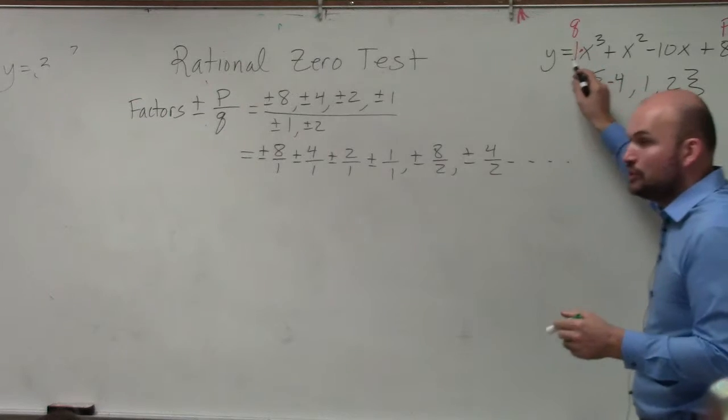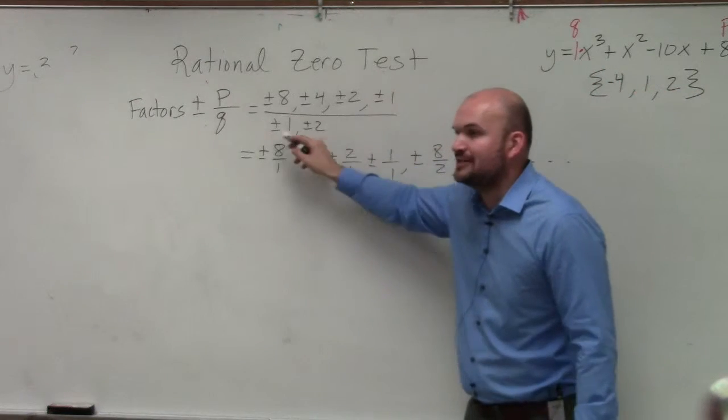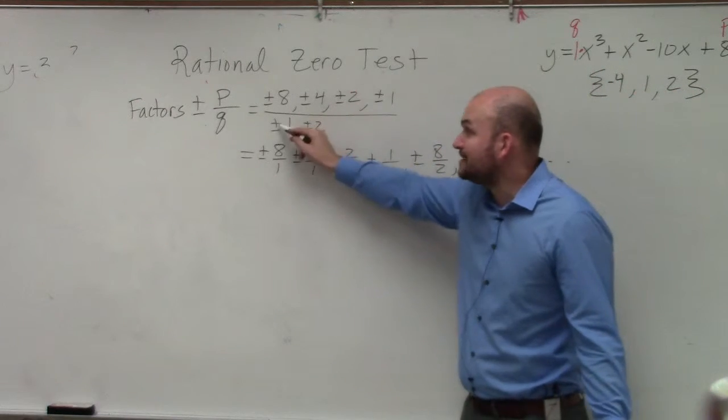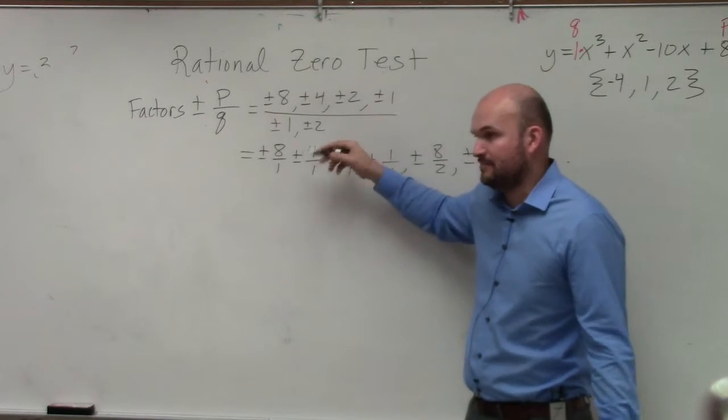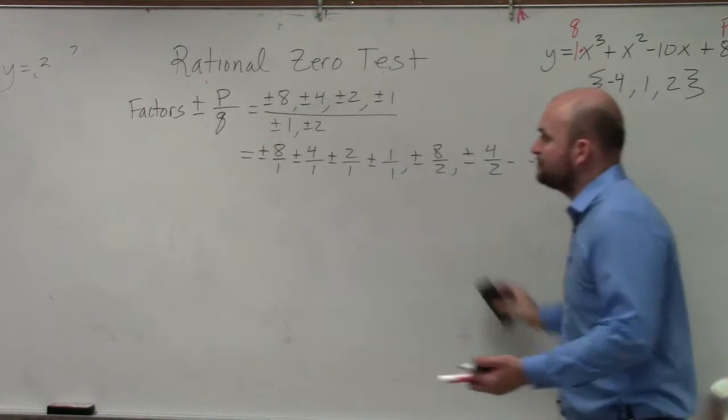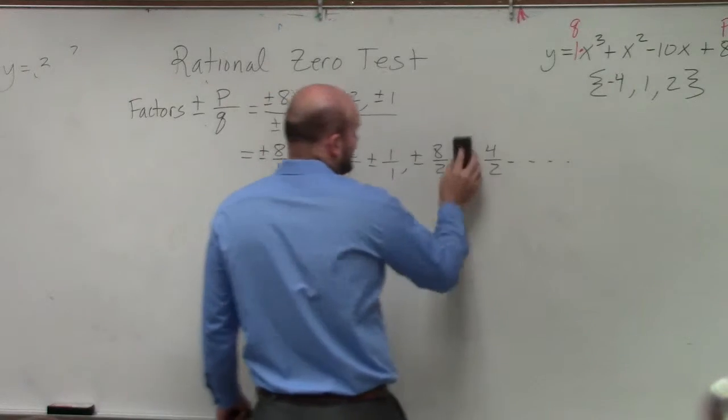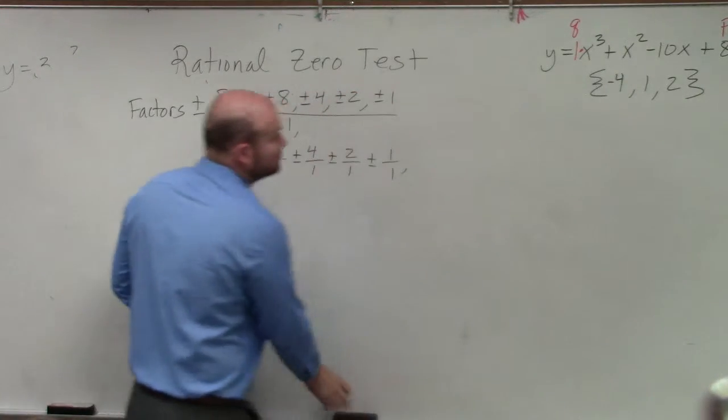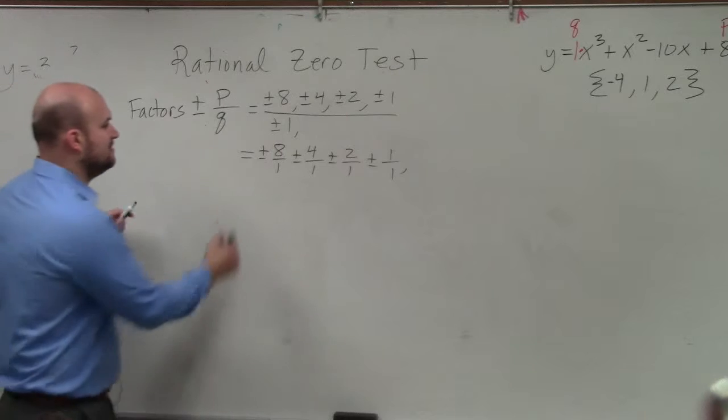I'm saying if this was 2, that means you'd have two different factors in the denominator. However many factors that are in q, you have to put your p over both of them, if that was the case. But for this problem, that's not the case, because 1 is the only factor for q. So now we just go and simplify.